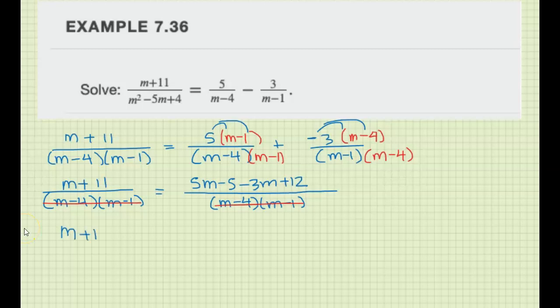We have m plus 11 equals 2m plus 7. So this is a simple equation which we solve by subtracting things from both sides. Subtract m and subtract 7. This cancels. We get 4 equals m, and that's the answer so far.